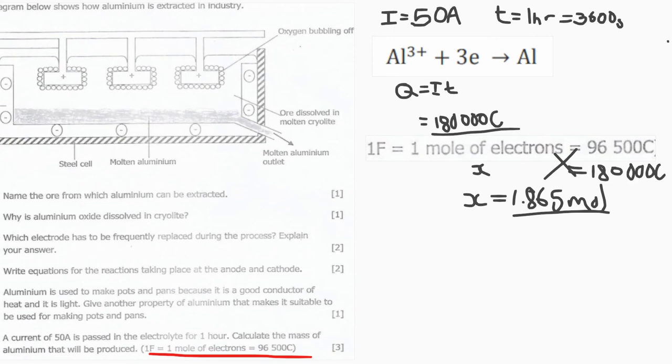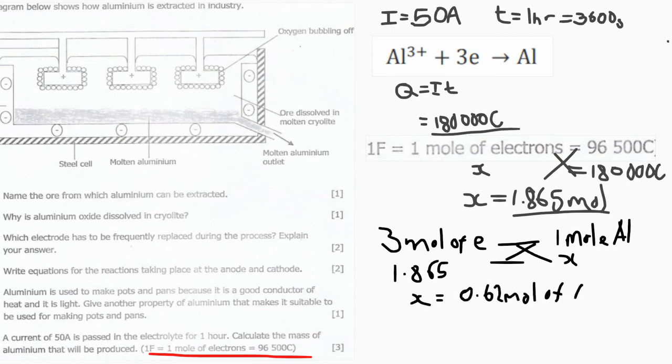So we know the amount of electrons. Now back to the equation: three moles of electrons produces one mole of aluminum. What about 1.865 moles of electrons - what amount of aluminum moles will we get? When we cross multiply we get 0.62 moles of aluminum.